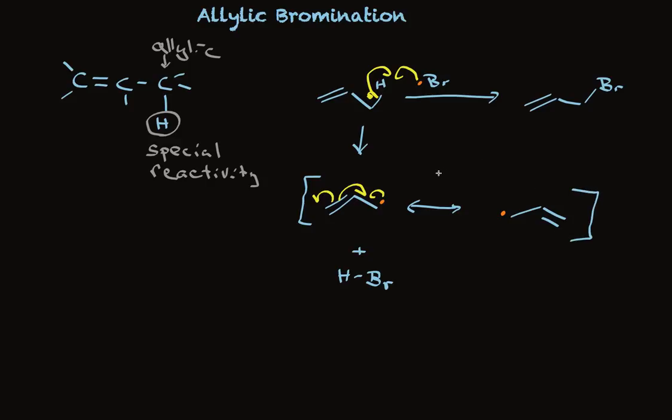So when the radical reacts with bromine in a second step, it reacts at either carbon. So now we're picturing this electron forming a bond with bromine, as this bromine-bromine bond is broken, in a homolytic reaction that makes a bromine radical. You've seen that before.